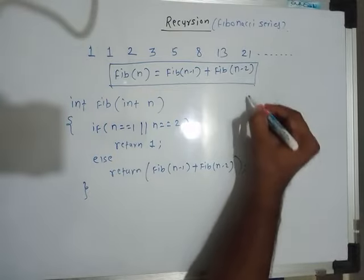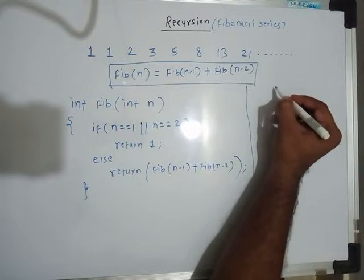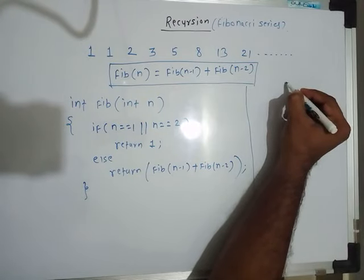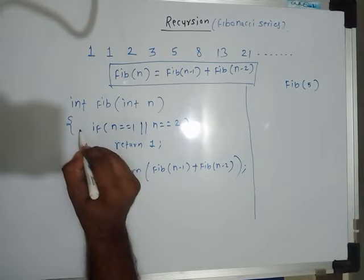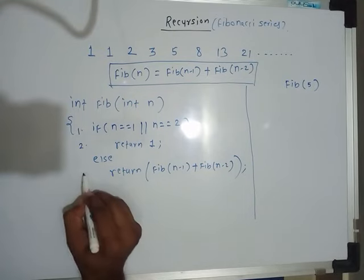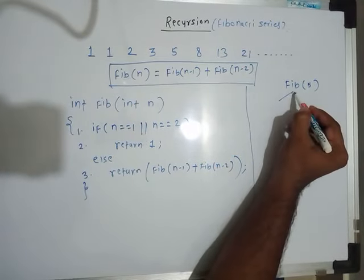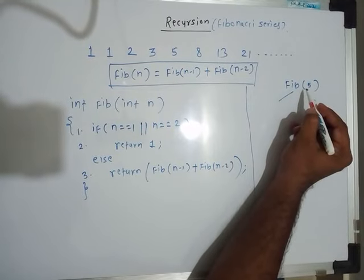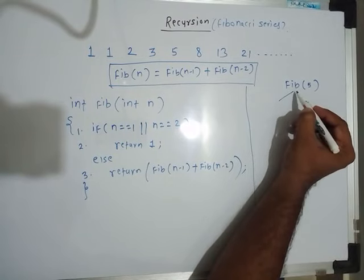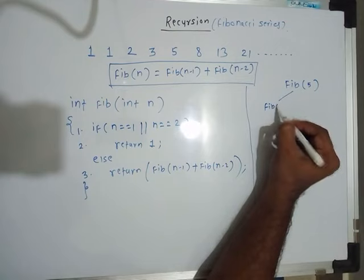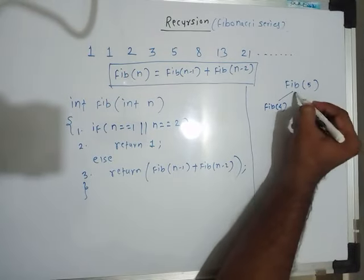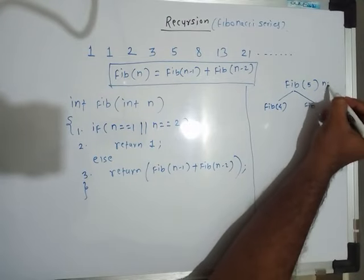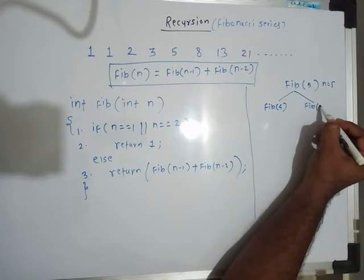Let's execute this function for n equal to 5. Fib(5) is called from the main function. Let me number the statements 1, 2, and 3. For Fib(5), statement 1's condition is false because n is neither 1 nor 2, so we go to statement 3: return Fib(n-1) plus Fib(n-2), which generates two recursive calls — Fib(4) and Fib(3).